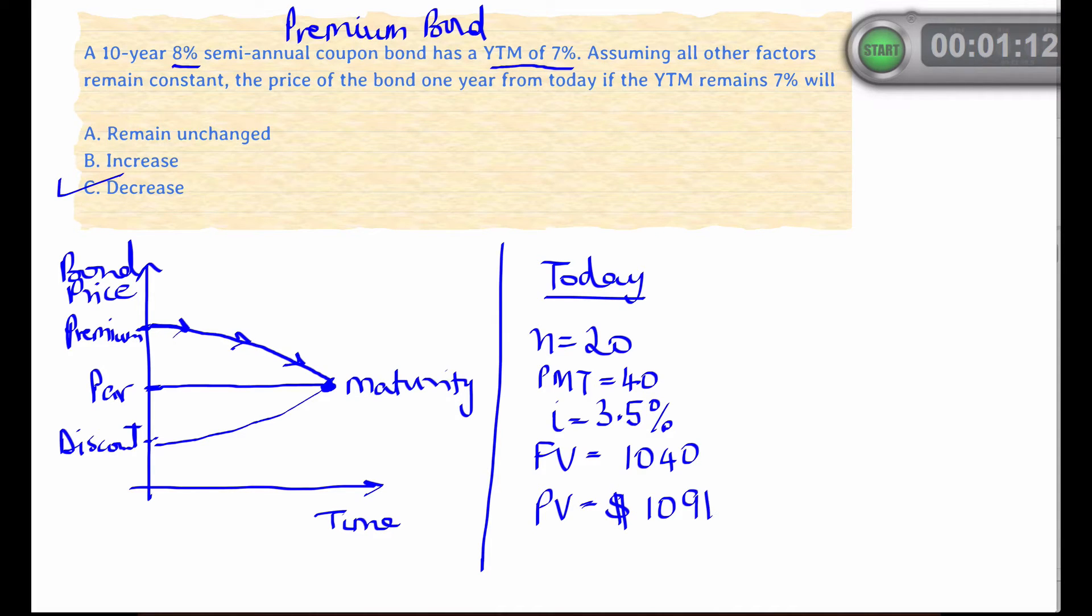Now we can plug in the numbers for a year from now, when the only thing that changes is n, which becomes 18. We can check and confirm that the present value is in fact lower than the price today. The number we get is $1087.46. So this confirms that in fact the bond price does fall.